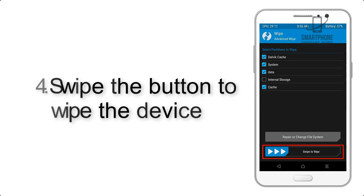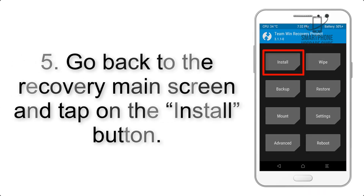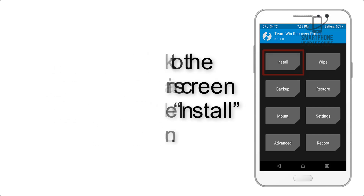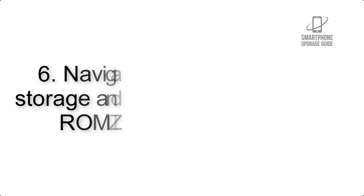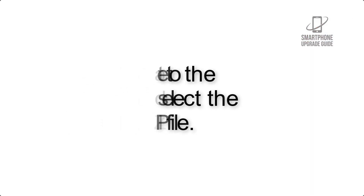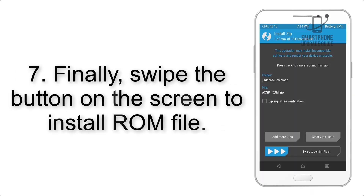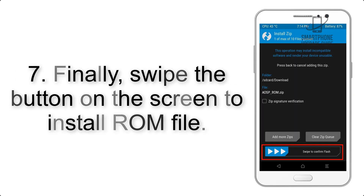Step 4: swipe the button to wipe the device. Step 5: go back to the recovery main screen and tap on the Install button. Step 6: navigate to the storage and select the ROM zip file.